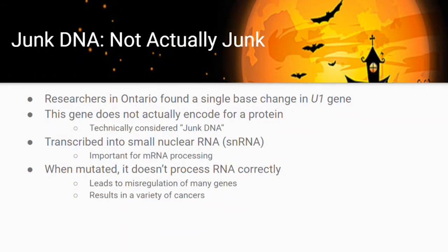One example of the importance of non-coding DNA is a recent finding by a group in Ontario involving the U1 gene. Despite its name, it doesn't encode a protein, but it is transcribed — the DNA is converted to RNA. This RNA is a small nuclear RNA important for processing other RNAs that are converted into protein. The group found that when there was a mutation in this U1 RNA, it led to misregulation of many other proteins, resulting in a variety of cancers.